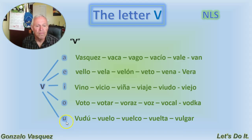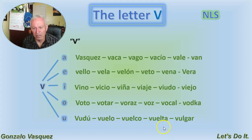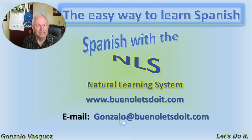La ve con la U: vu. Voodoo. Vuelo means fly. Vuelco means to turn. Vuelta means the same thing — turn. Vulgar is a dirty mouth or dirty word. Once again: vu — voodoo, vuelo, vuelco, vuelta, vulgar.